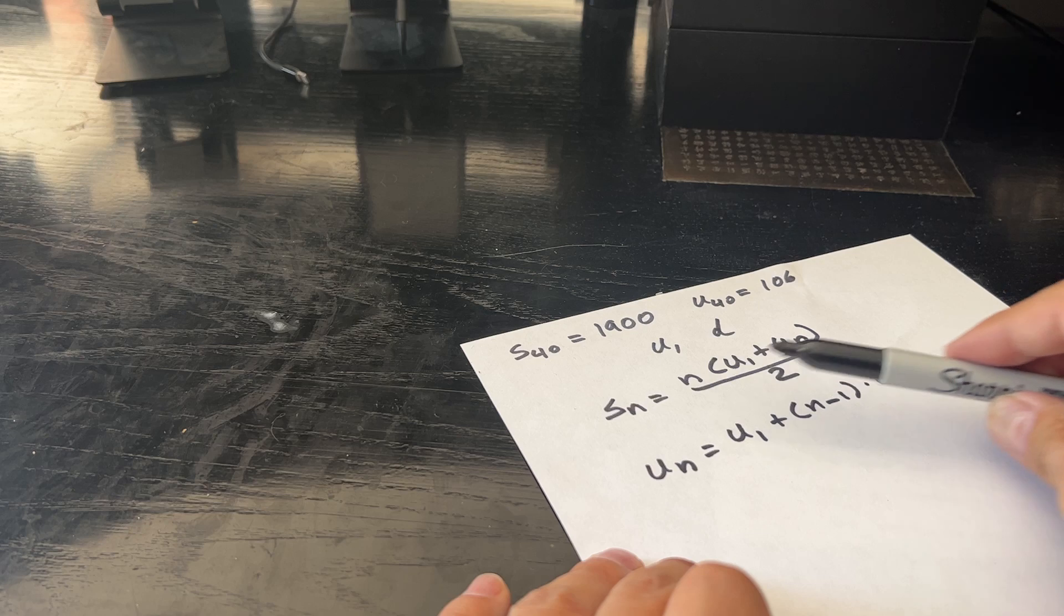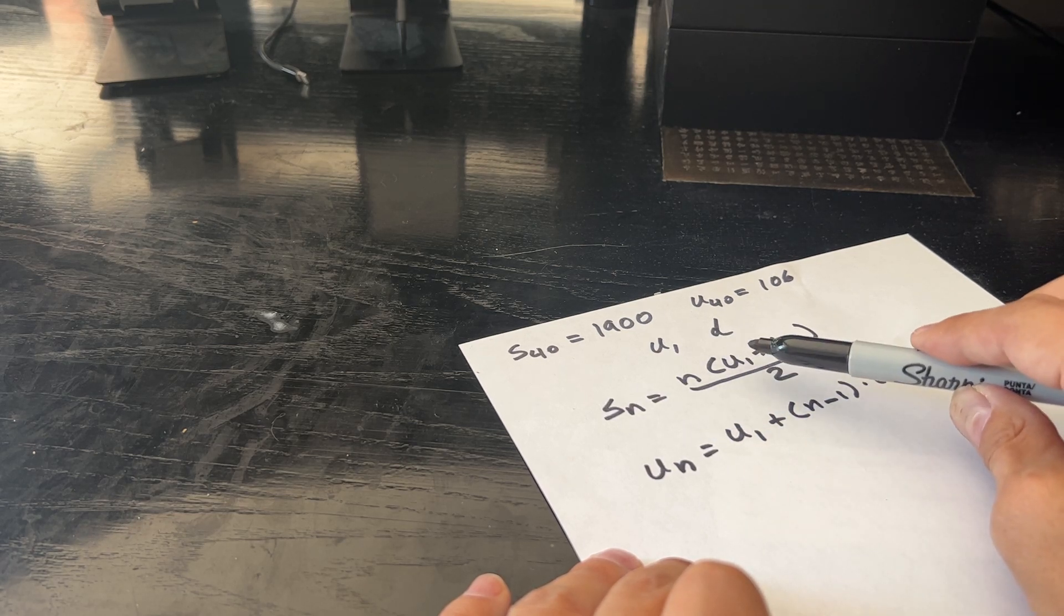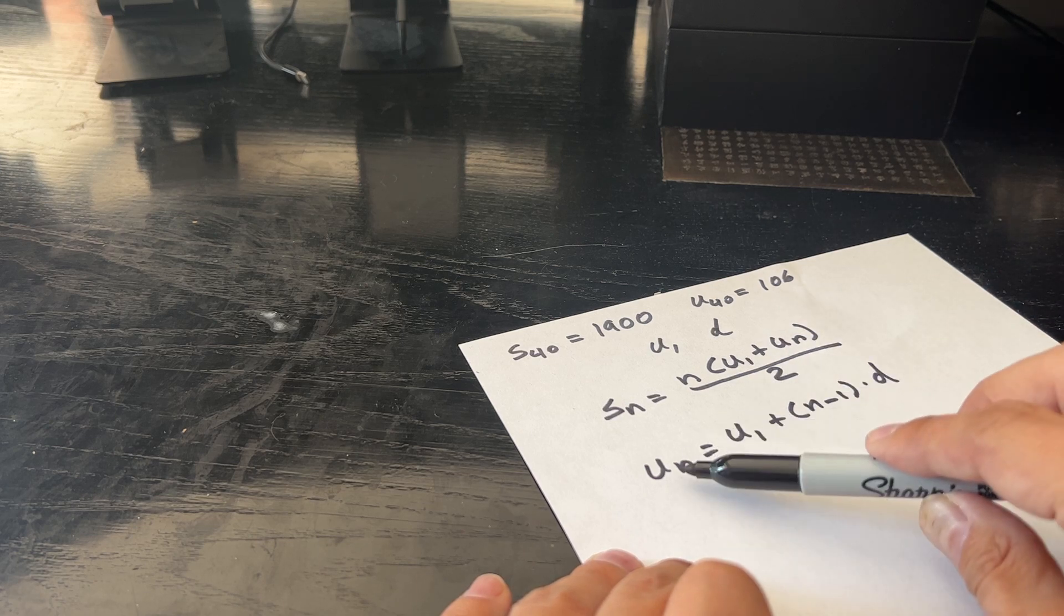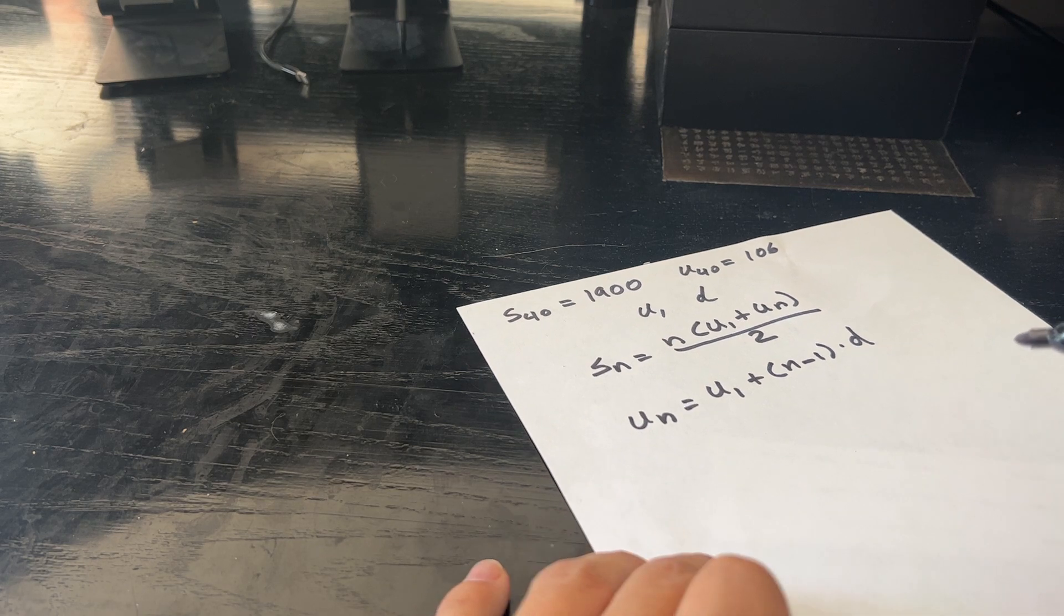So for this first one, we have every value except U1. Once we figure out U1, we plug it into this other one. We already have Un, we have N, and we're just going to solve for D.